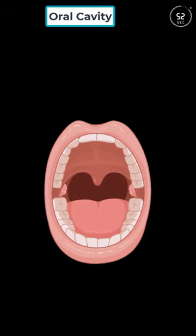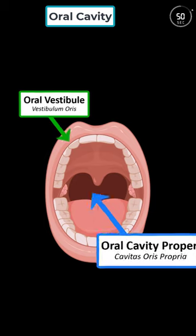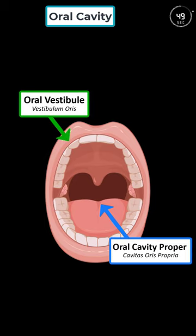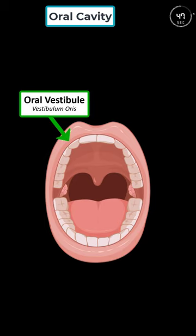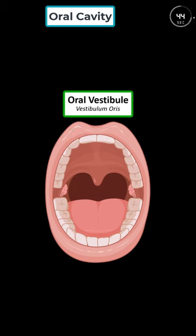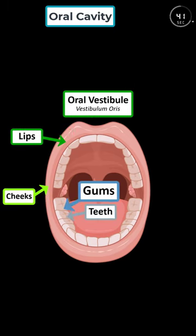The oral cavity is divided into two parts: the oral vestibule and the oral cavity proper. The oral vestibule is the area outside your teeth and gums. It's bordered by the lips and cheeks externally, and teeth and gums internally.